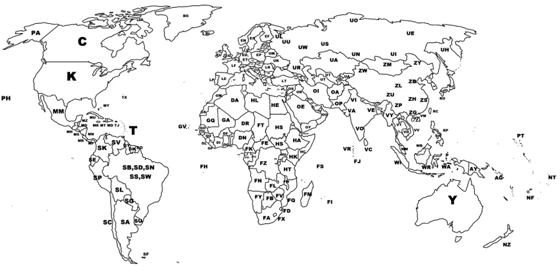Thus U-XXX referred to the Soviet Union, with the second letter denoting the specific region within it. Europe had too many locations for only one starting letter, so it was split into E-XXX for Northern Europe and L-XXX for Southern Europe. The second letter was more specific: E-G-XX was the United Kingdom (G for Great Britain), E-D-XX was West Germany (D for Deutschland), E-T-XX was East Germany — though the E-T-XX code was reassigned to military fields after reunification. L-E-XX was Spain (E for Espanya), L-A-XX was Albania, and so on.